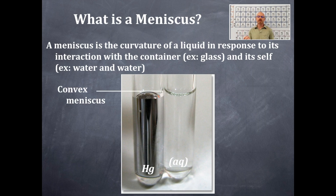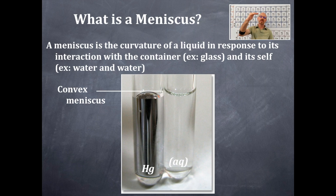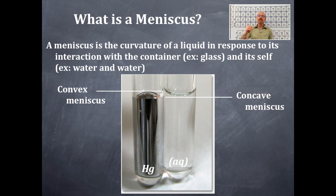With a mercury meniscus — like a mercury thermometer or a mercury barometer — the meniscus is convex, and that is it's curved like this right here. And you're going to read the top of that meniscus.